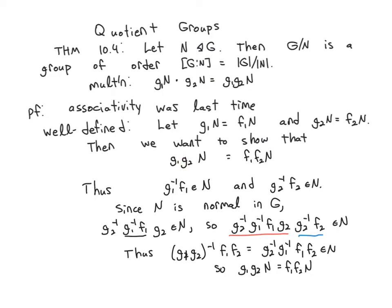Because this is what I would get if I multiply g1 N times g2 N according to my formula. The other one is what I would get according to my formula if I multiply f1 N times f2 N. And in order for this to be a well-defined function, the resulting calculations have to be the same, regardless of which coset representatives I picked, because they belong to the same cosets.